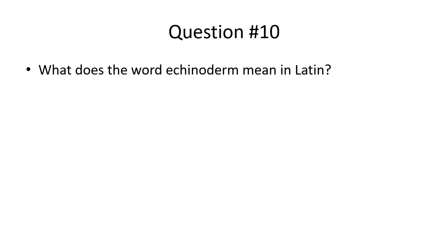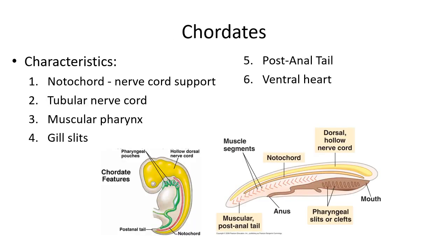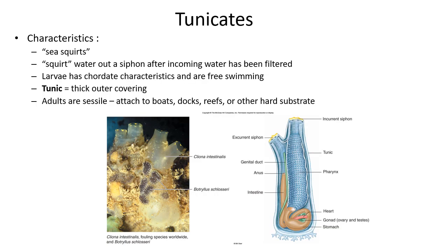Question: What does the word echinoderm mean in Latin? Now, chordates — the phylum we belong to. They have six characteristics: the notochord, tubular nerve cord or dorsal hollow nerve cord, gill slits, and post-anal tail, plus a muscular pharynx and a ventral heart. Tunicates are sea squirts, one type of chordate. They have a sessile and free-living form, a basic siphon that squirts water through it for filter feeding, and their outer layer is called the tunic.